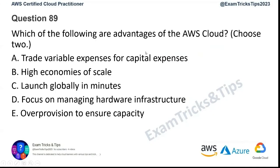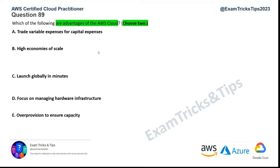Question 89: which of the following are advantages of AWS cloud? Choose two answers. We covered six advantages of AWS cloud in an earlier section. The keyword is advantages of cloud. Option A — trade variable expenses for capital expenses — has similar wording to the advantages section, but it's incorrect. The actual advantage is trading fixed expenses for variable expenses. Going to cloud means you're not spending upfront capital for building infrastructure; instead, you pay on a variable, pay-as-you-go basis. So option A is incorrect.